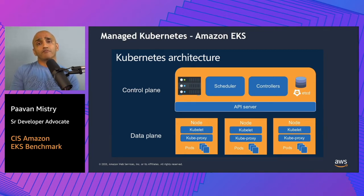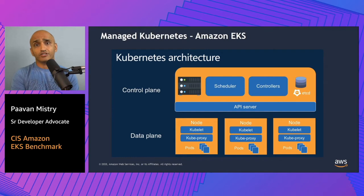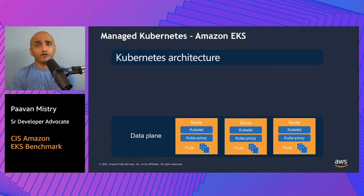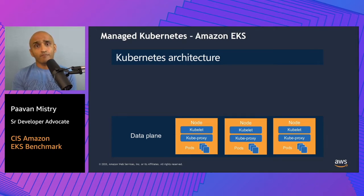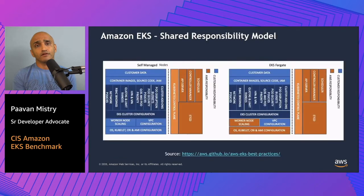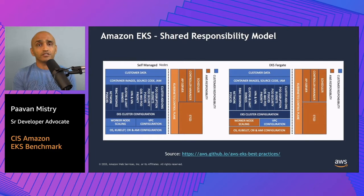With Amazon EKS providing customers a managed Kubernetes service that is Kubernetes conformant, customers are provided a managed control plane. Customers don't need to worry about security configurations for the control plane, neither do they have access to these configurations. AWS is responsible for availability and security of the control plane components. For managed and self-managed nodes in Amazon EKS, customers are responsible for the nodes they operate in the data plane, and the Kubernetes and security configurations within. AWS manages the control plane including the Kubernetes API server, controller manager, scheduler, the etcd datastore, and other infrastructure necessary to deliver a secure and reliable service.